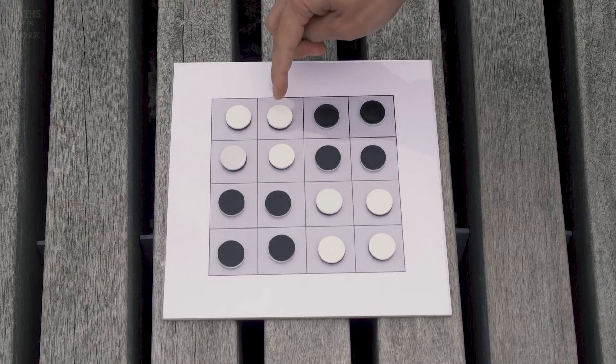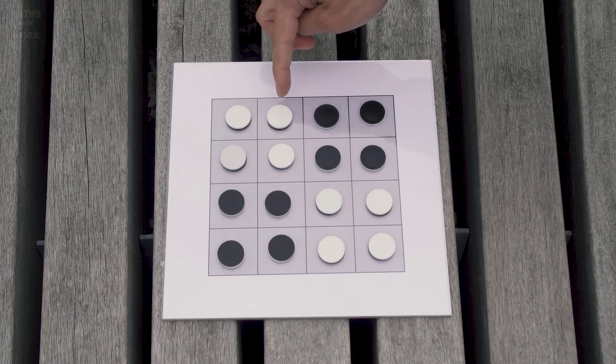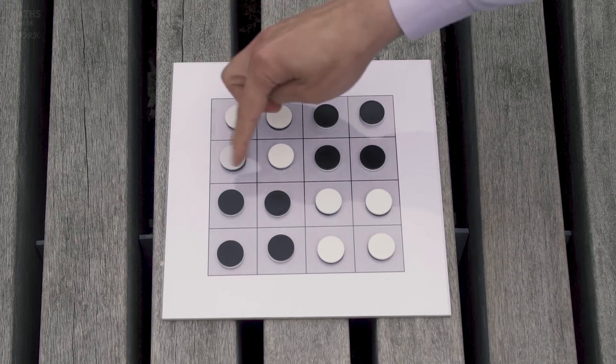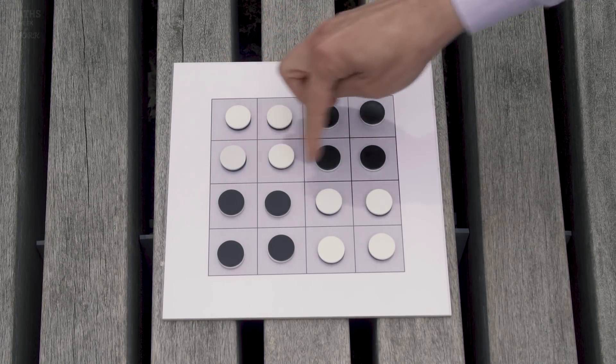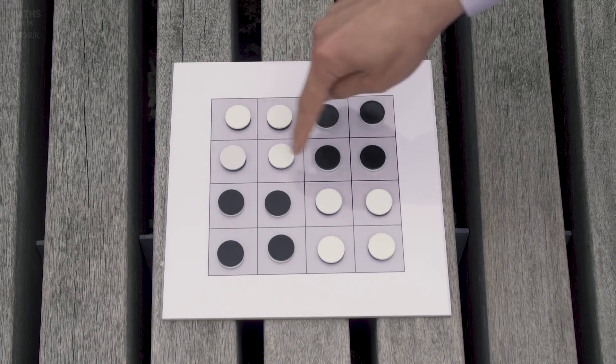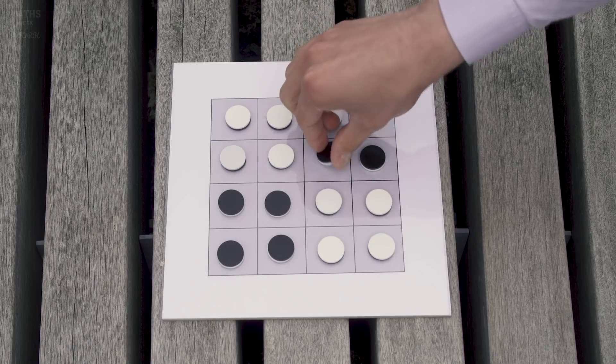Now if we look at this counter here we have to turn that one over again and that belongs to two different 2x2 squares. There's this one here and there's this one here. Now we've already turned this one over and we can't do it again so we should do this 2x2 square this time.